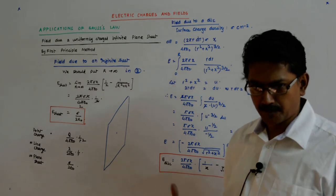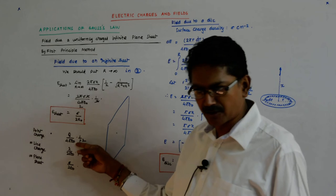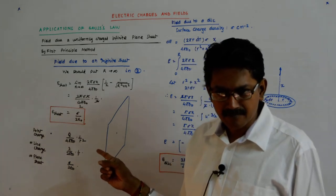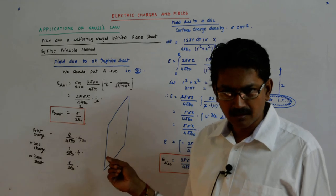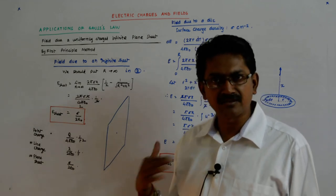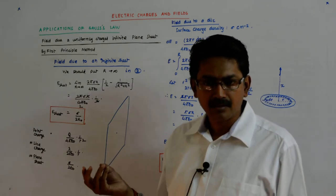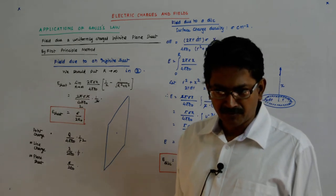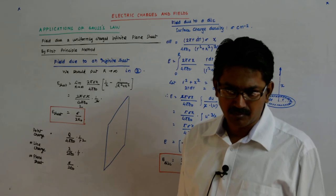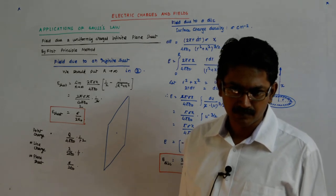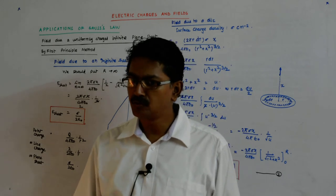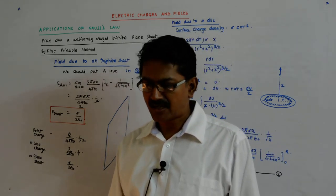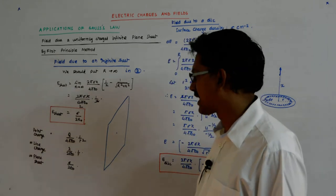If you put water then instead of epsilon_0 it will be epsilon_r. Epsilon_0 into epsilon_r—epsilon_r is taken such that we always take it greater than one, so the field goes down. The field is the highest in the vacuum. You will understand this when we do capacitance, the next chapter.